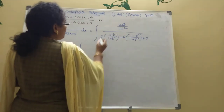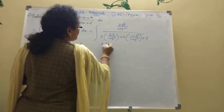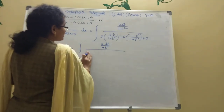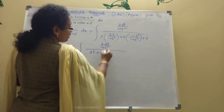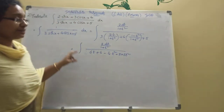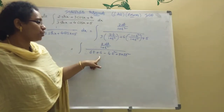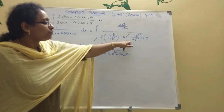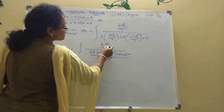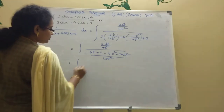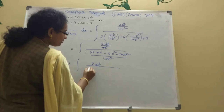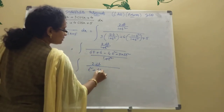Substituting into the integral: the denominator becomes 3 times (2t/(1+t²)) plus 4 times ((1-t²)/(1+t²)) plus 5. Taking LCM as (1+t²): numerator becomes 6t plus 4 minus 4t² plus 5 plus 5t². Simplifying: 6t plus 9 plus t². The dx term is 2 dt/(1+t²), so (1+t²) cancels, leaving integration of 2 dt divided by (t² plus 6t plus 9).